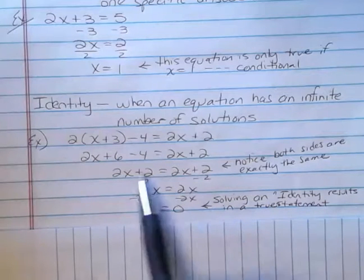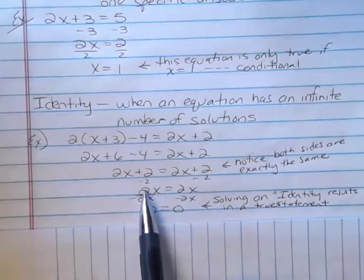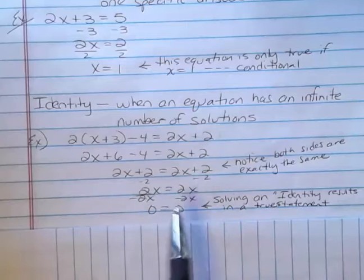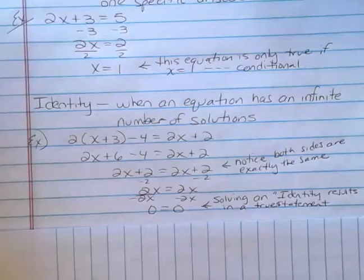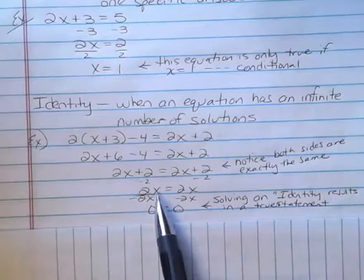You could have noticed it right here. As soon as you realize that both sides of your equation are exactly the same, it's an identity, and there's an infinite number of solutions.